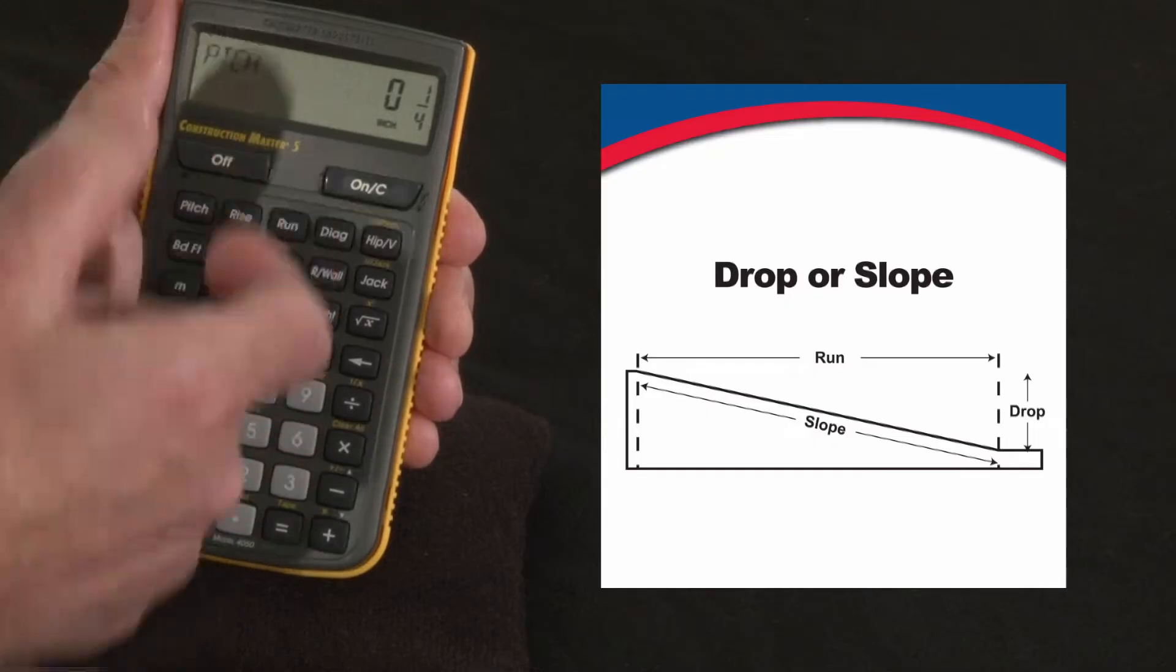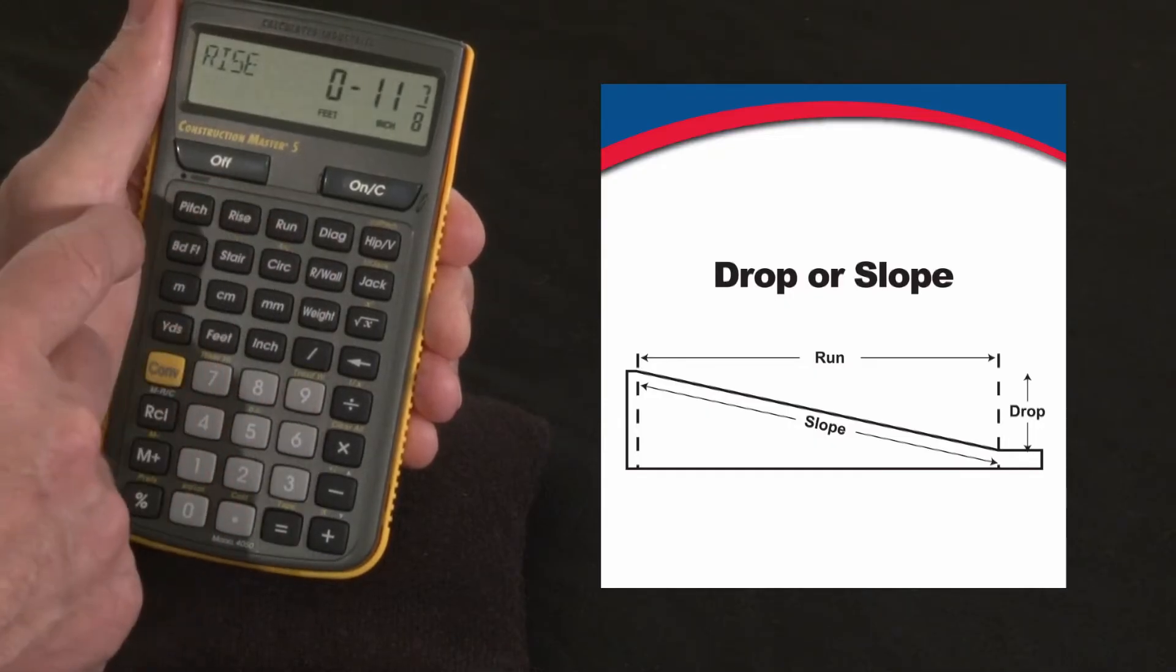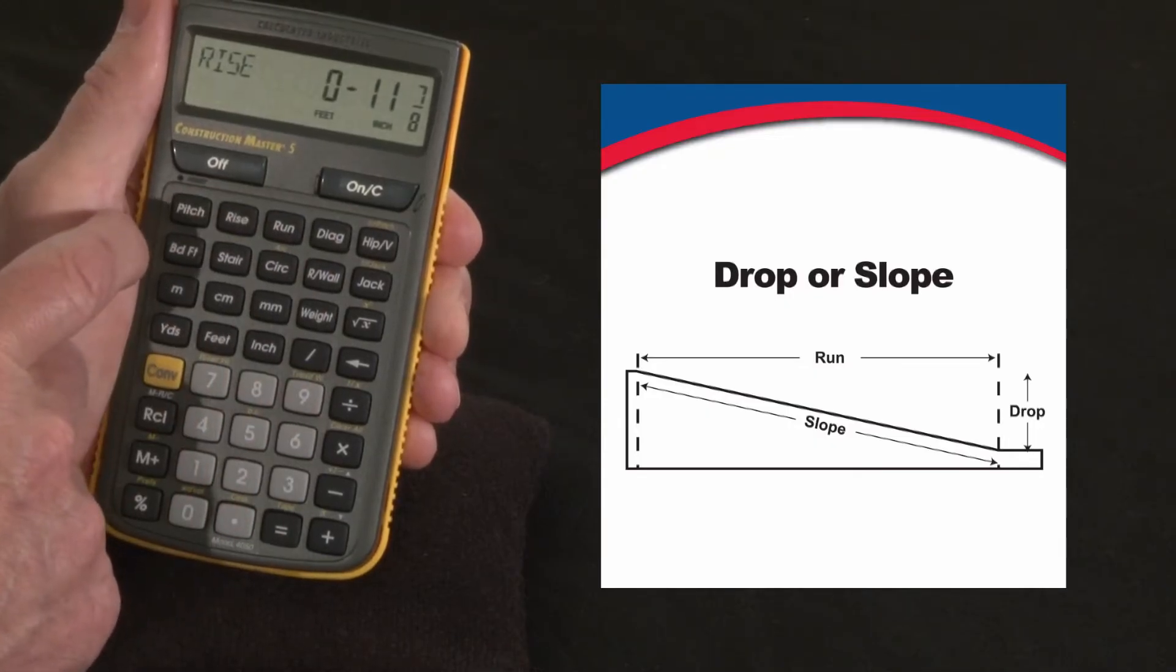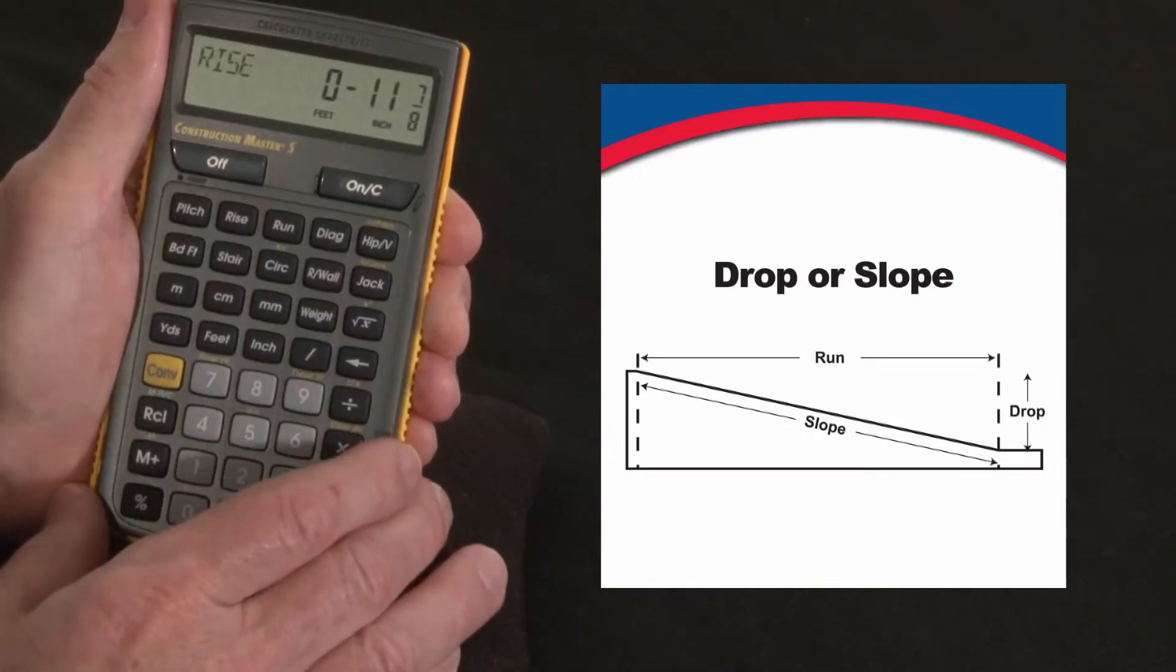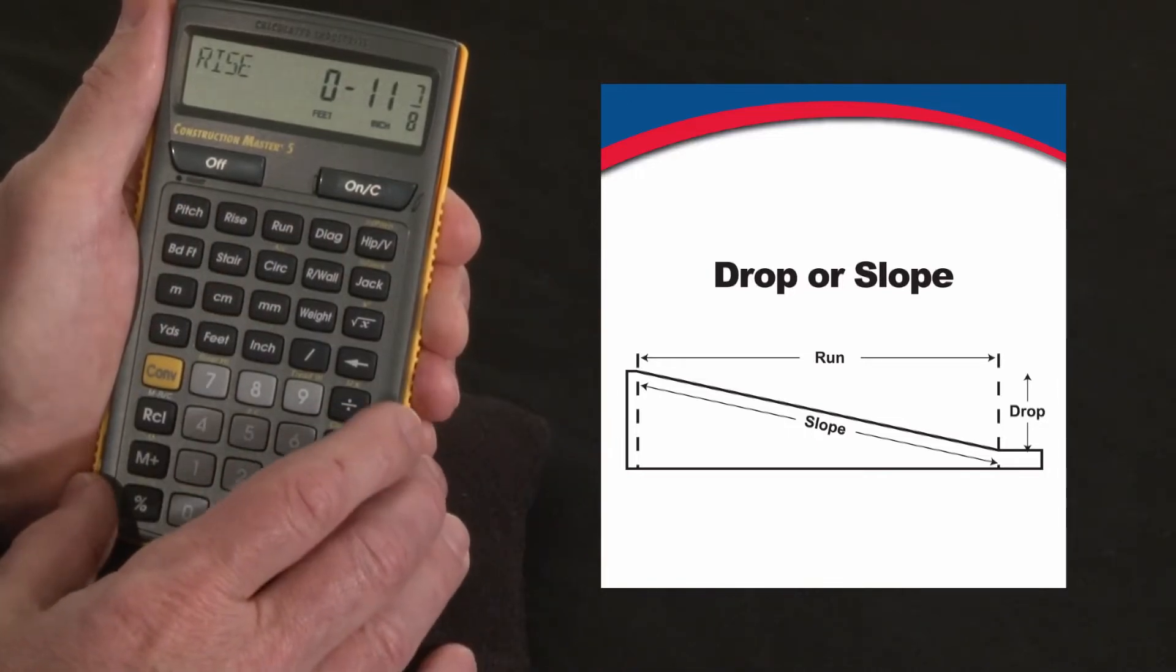Now I hit the rise key to give me the vertical change or vertical distance, and that's going to be 11 and 7/8 inches lower at the far end than at this end. And you say, well, that may be a little bit much.